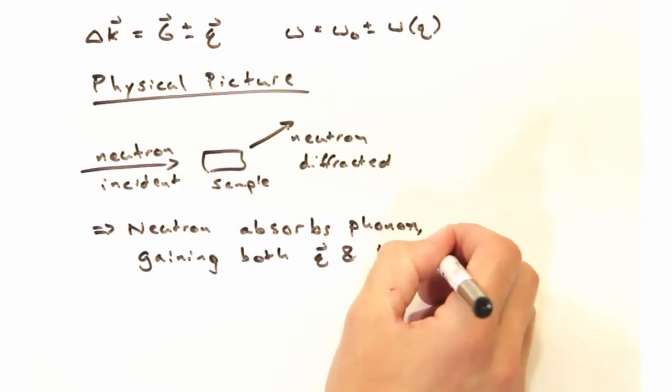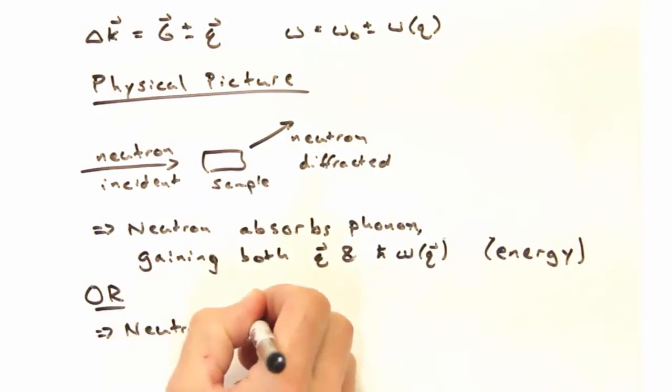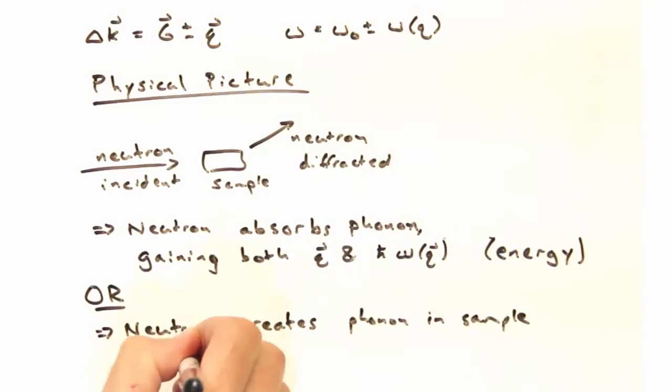gaining both the momentum and the energy of that phonon. Or the neutron is going to create a phonon in the process, and it's going to lose both the momentum and the energy that was required to create the phonon.